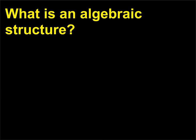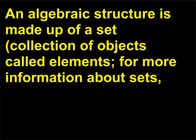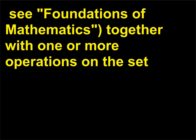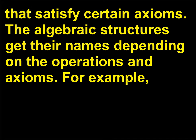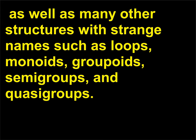What is an algebraic structure? An algebraic structure is made up of a set — a collection of objects called elements — together with one or more operations on the set that satisfy certain axioms. The algebraic structures get their names depending on the operations and axioms. For example, algebraic structures include fields, groups, and rings, as well as many other structures with names such as loops, monoids, groupoids, semi-groups, and quasi-groups.